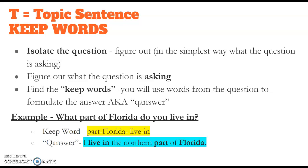We're going to call this a quanser, or the question that you turn into your answer. So your Topic Sentence might look like this. I live in the northern part of Florida. I took the keep words part, Florida, live, and in, and I turned them into my Topic Sentence. I live in northern part of Florida. So I'm taking the prompt, I'm turning that question into an answer or a quanser, and I'm making it my Topic Sentence.